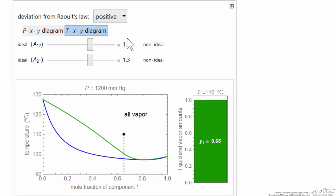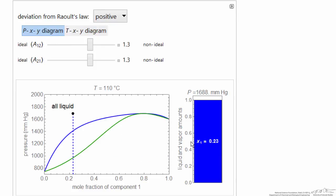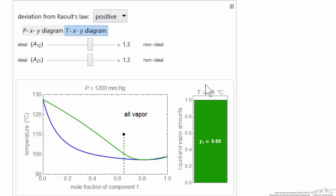Positive deviations from Raoult's law in the pressure diagram give a maximum pressure azeotrope. In temperature, we have a minimum temperature azeotrope.